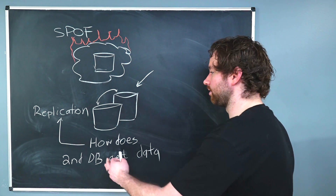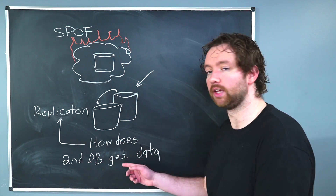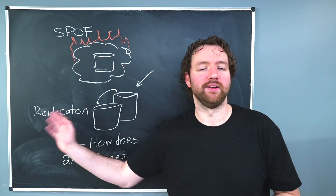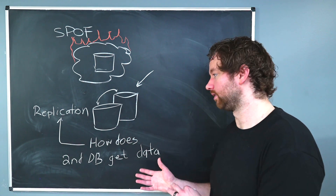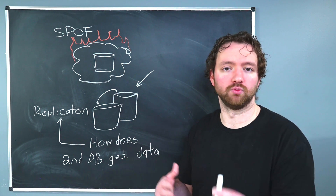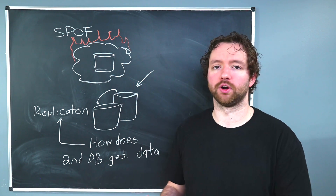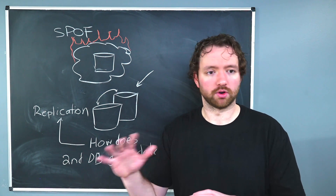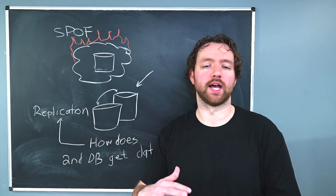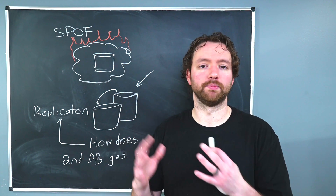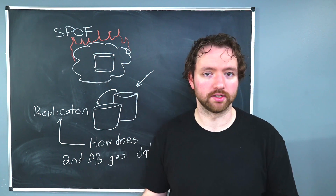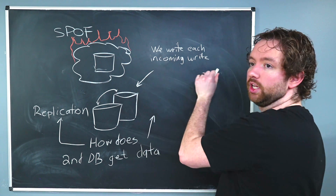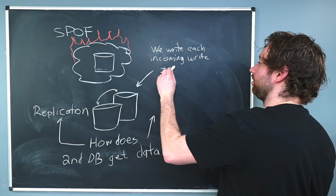This is where we introduce the idea of replication. With replication, you can think of data being copied over to another server. That second database is ready to go, so if our main database goes down we can direct traffic to the other database without any interruption in the user experience — removing the single point of failure. To understand how the second database gets the data, you can look up the write-ahead log (WAL), which logs everything that happens to the database and can be used to replicate the same information to another instance. Practically, we write each incoming write to both databases.